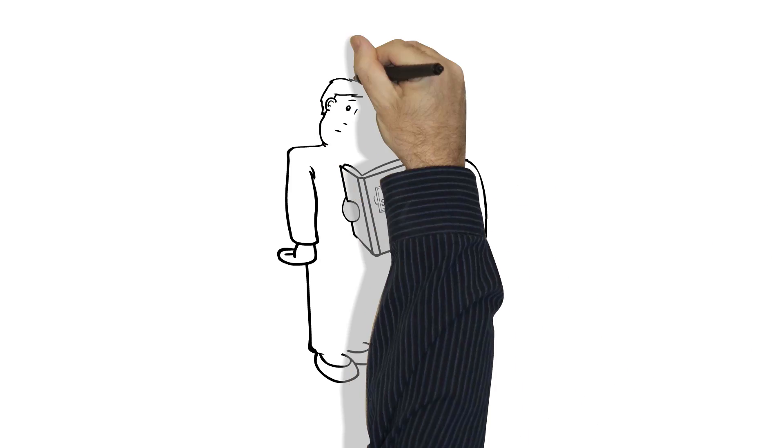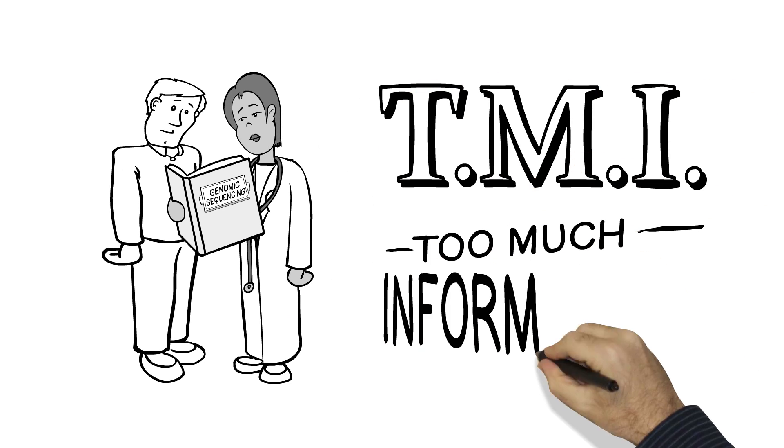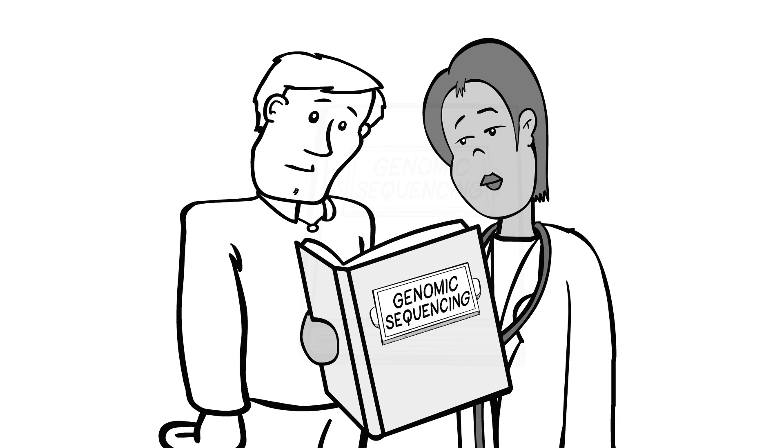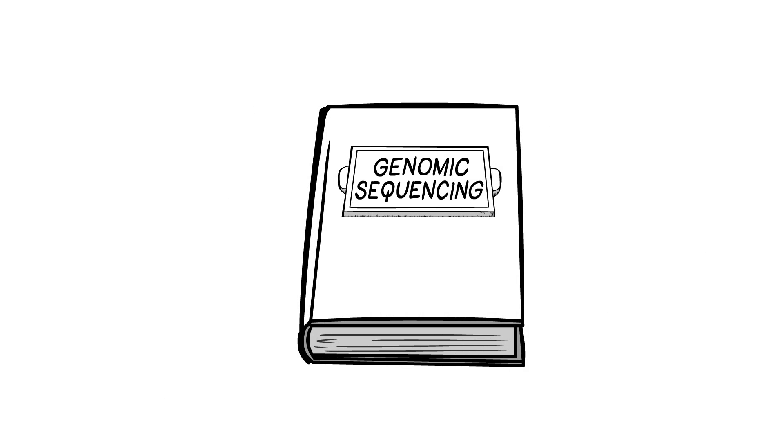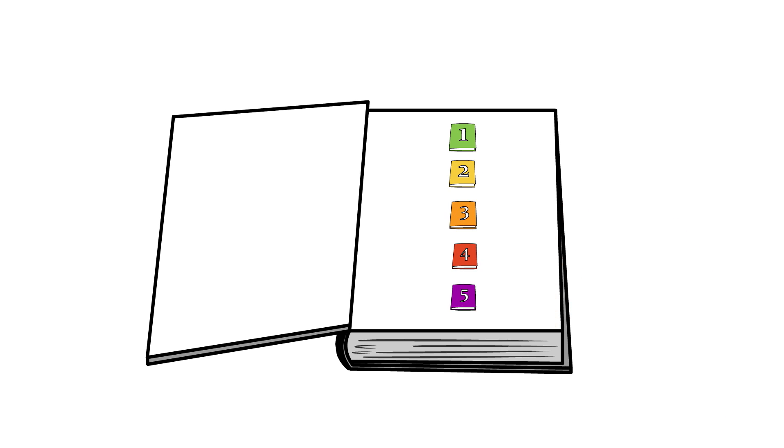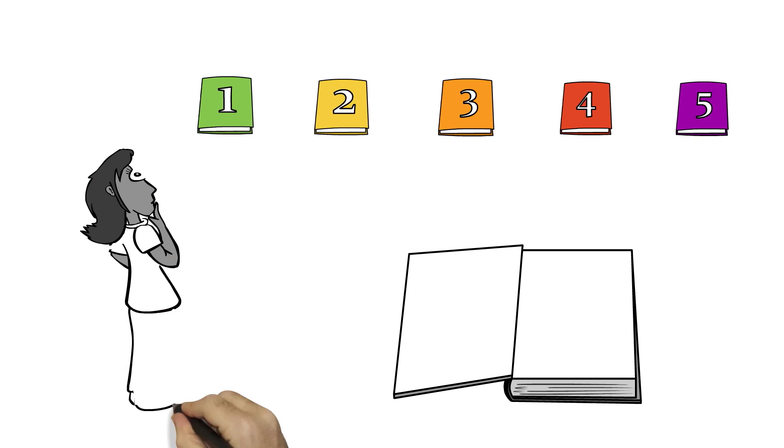As we mentioned at the top, when we map your genome, we get what my kids would call TMI, too much information. So to help you decide in advance what you want to know about, it may be helpful to think about your genome as a book divided into five chapters or categories of disease risks. This will help you decide which categories or chapters of your book you want to open.